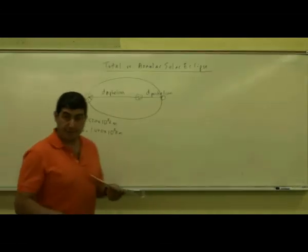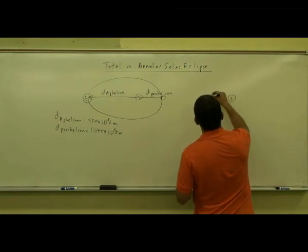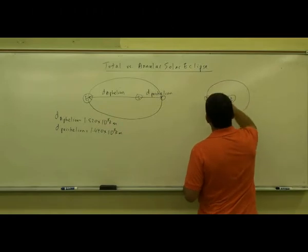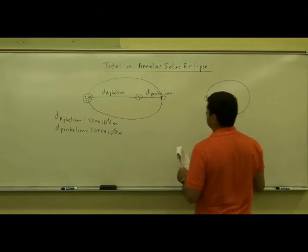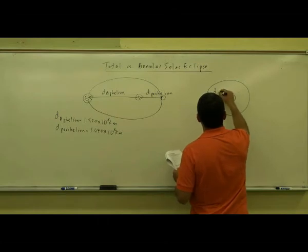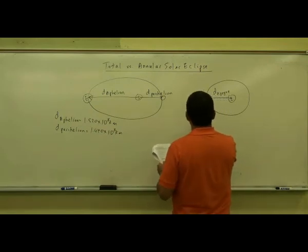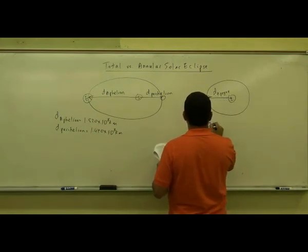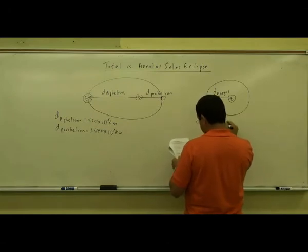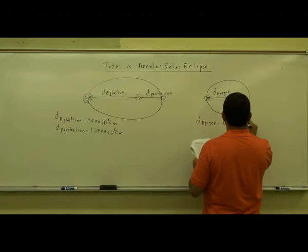The same thing happens with the Moon going around the Earth. Here is the Moon going around the Earth. When the Moon is far from the Earth, it's called Apogee. The distance of the Moon at Apogee is 405,500 kilometers.